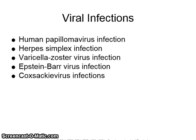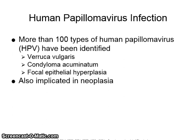Viral infections include human papillomavirus, herpes simplex, varicella zoster, Epstein-Barr, and Coxsackievirus. Human papillomavirus, also known as HPV, has more than 100 types that have been identified. Among them are Verruca vulgaris, Condyloma acuminatum, and Focal epithelial hyperplasia. HPV is also implicated in some neoplasias or cancers.